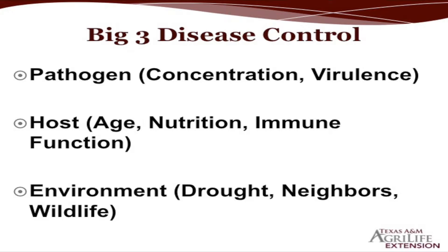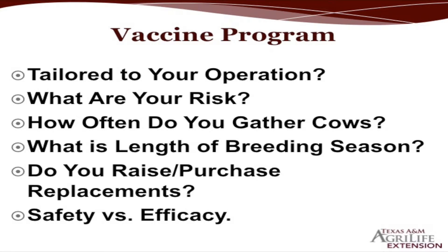The host is the next factor: what's the age of the host, what's the nutrition, what's the immune function? If an animal's immune function isn't good because of lack of nutrition, age, or whatever, you could vaccinate till the sun comes up and still have issues. Then there's the environment — sometimes we don't have much control over that. Neighbors and wildlife are also going to affect your herd health program.